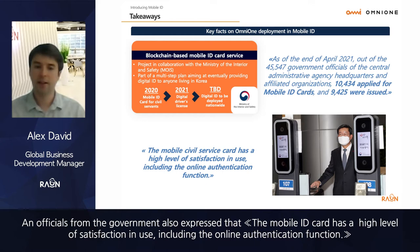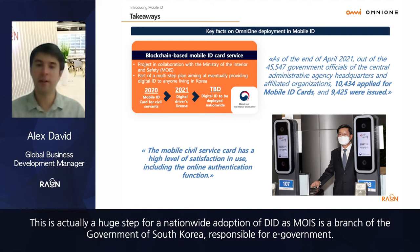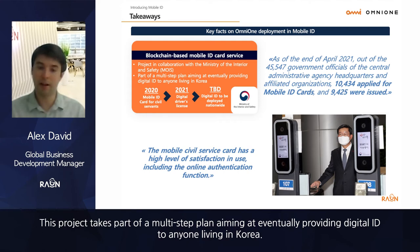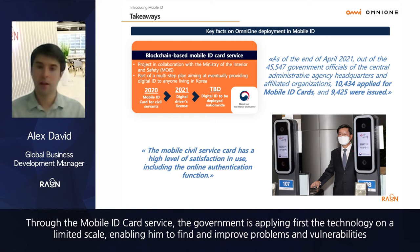This is a huge step for nationwide adoption of decentralized identifier technology, as MOIS is the branch of the South Korean government responsible for e-government. One of the purposes of the mobile ID for public officials is to serve as a pilot project before the introduction of a digital ID card for the general public. This project is part of a multi-step plan aiming to eventually provide digital IDs to anyone living in Korea, enabling the government to find and improve problems and vulnerabilities while verifying the convenience and security of these new authentication means.